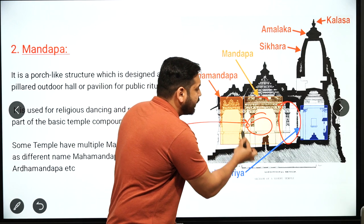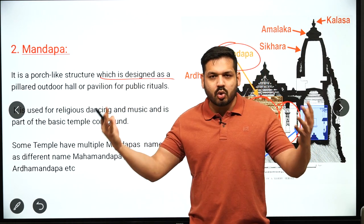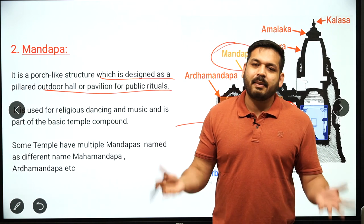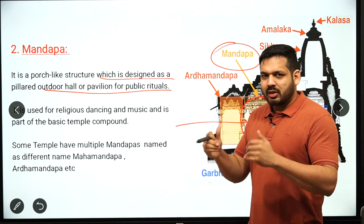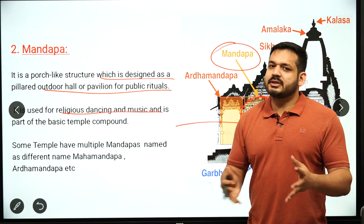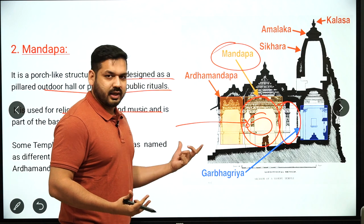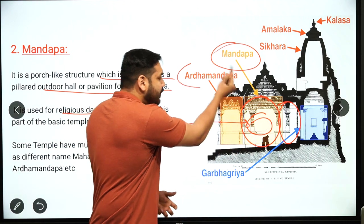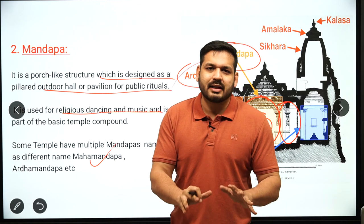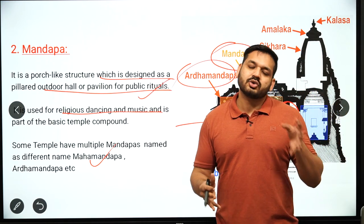The second feature is the Mandap — a porch-like structure designed as a pillared outdoor hall and pavilion for public rituals. This is the hall where people do puja, prayers, and religious dance and music. Some temples have multiple Mandaps with different names such as Ardha Mandap and Maha Mandap. The Mandap is essentially the prayer hall where you stand during worship.